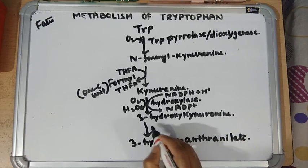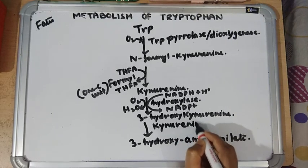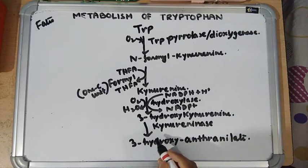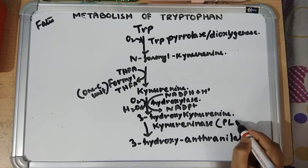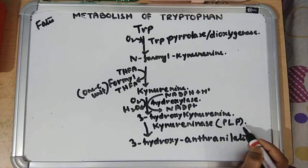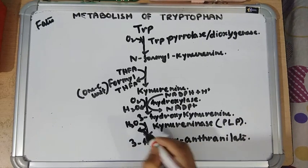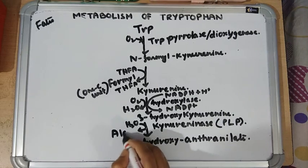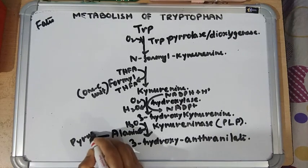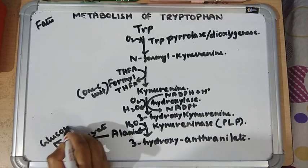3-Hydroxyanthranilate is formed by the enzyme kynureninase. This enzyme requires the coenzyme pyridoxal phosphate, which is produced from vitamin B6 or pyridoxine. In this reaction, alanine is formed. This alanine can form pyruvate by transamination, and pyruvate can form glucose by gluconeogenesis — this is how glucose is formed.